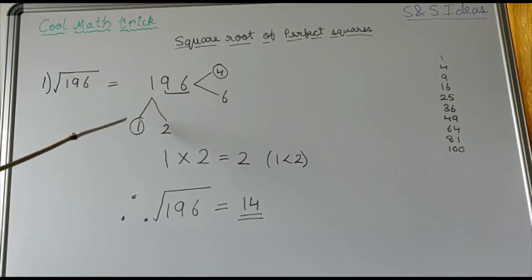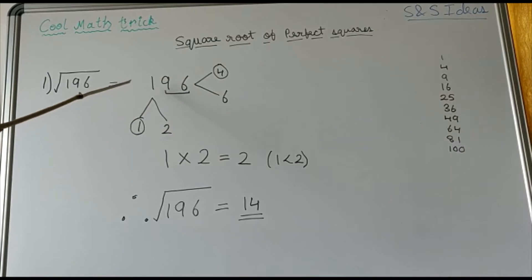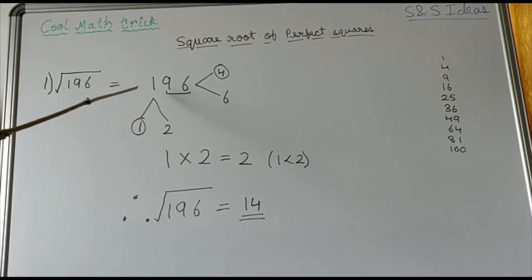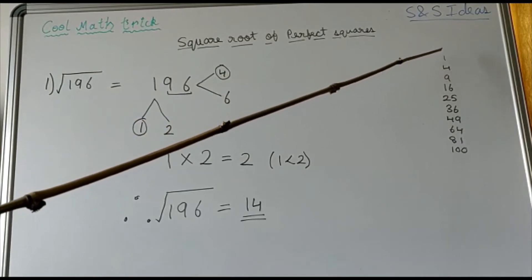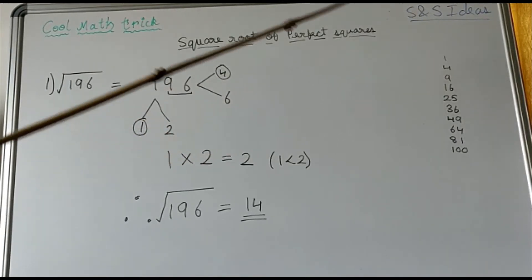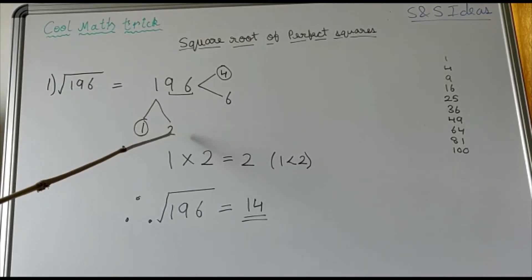Now let us move on to the remaining digits, or the second part of our square number. Between which two squares does 1 lie? It is 1 squared (which is 1) and 2 squared (which is 4). So here I have written the two possibilities of the tens place of our square root.